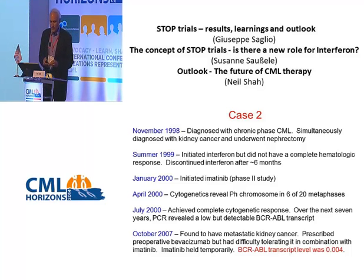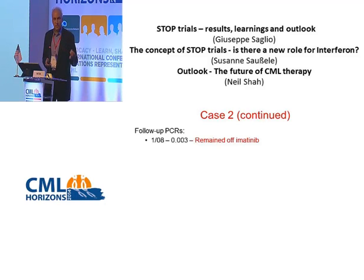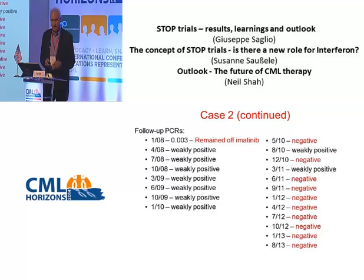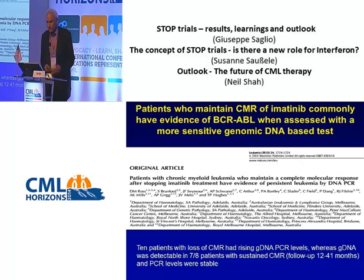My colleague told him to hold his imatinib because his disease was under such good control and his kidney cancer required immediate attention. His BCR-ABL transcript level at that time would represent a level between an MMR and an MR4 — always positive and quantifiable. In October 2007 he discontinued imatinib, and in January 2008 his value remained stable. Then, while continuing to hold imatinib, his level not only remained constant but actually declined. By 2010 he tested negative and continued to test negative. He died of his kidney cancer at the age of 81 in late 2013. This case is remarkable because his molecular response actually improved once he discontinued imatinib therapy.